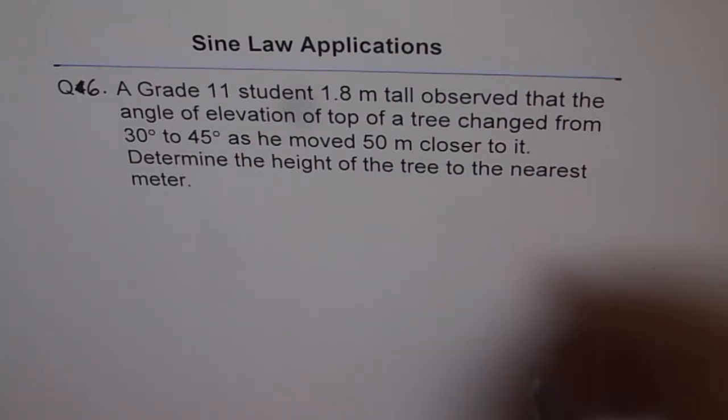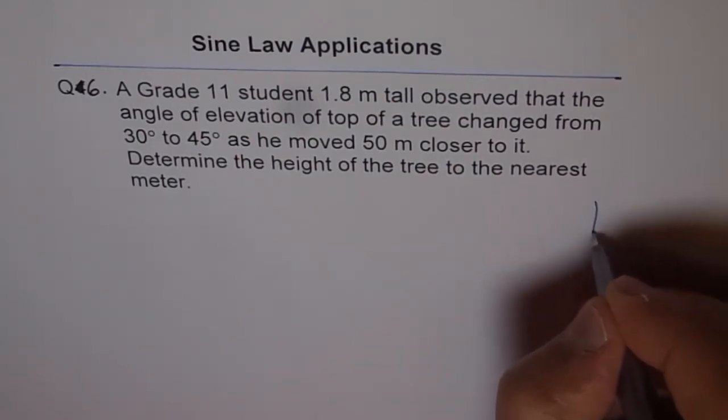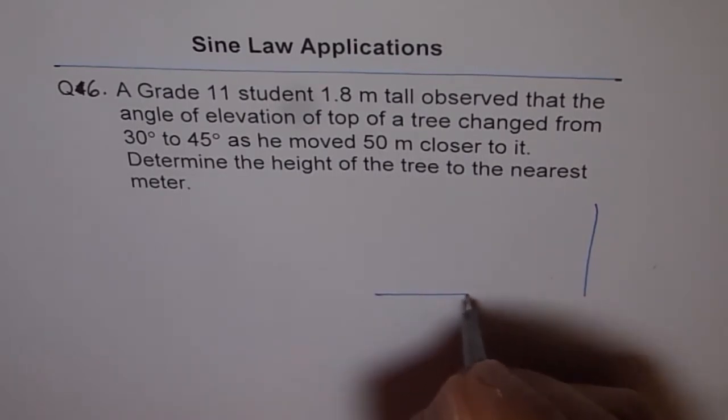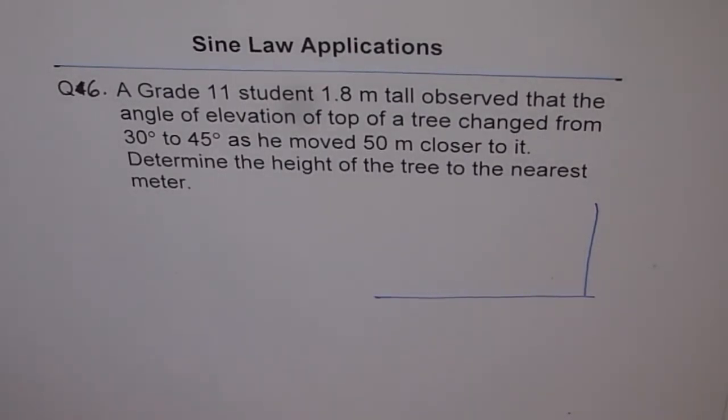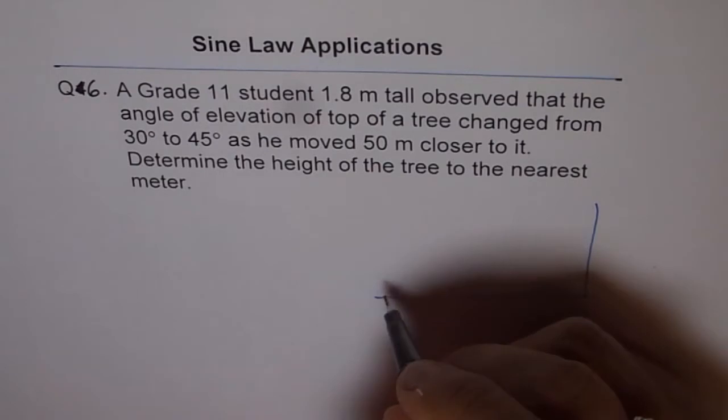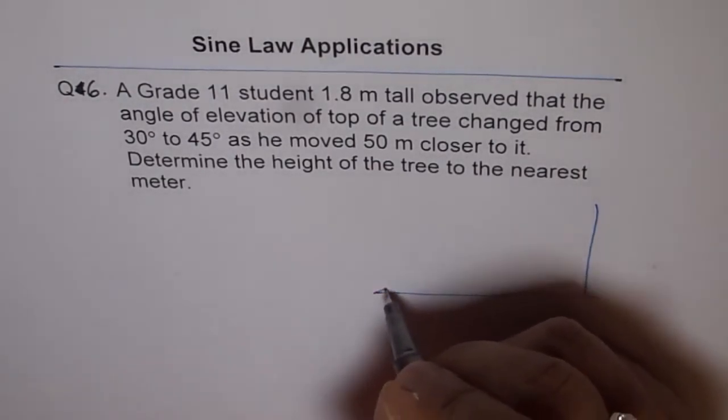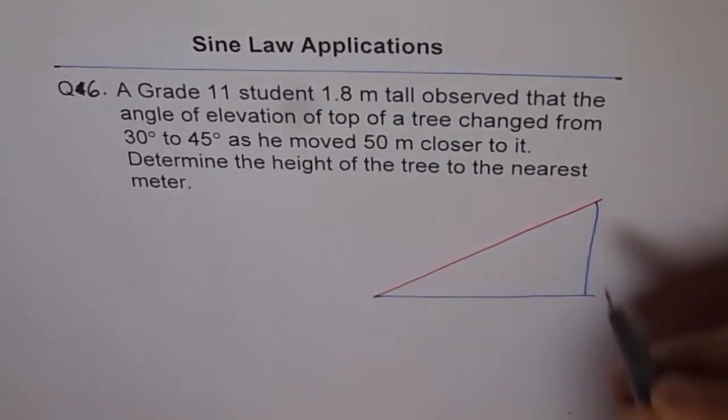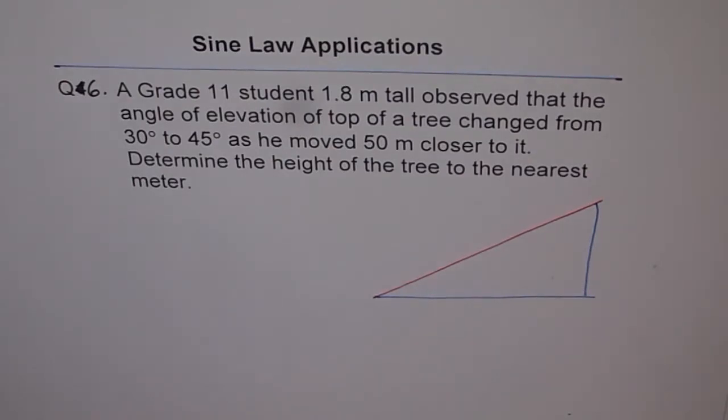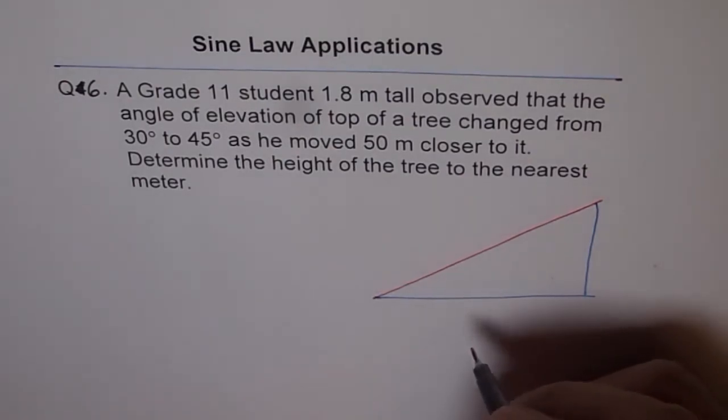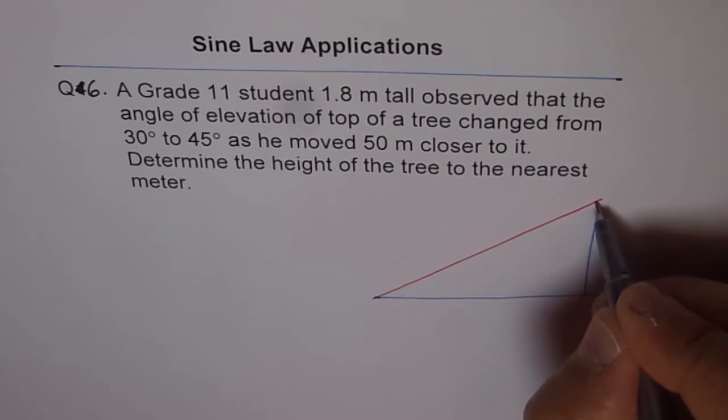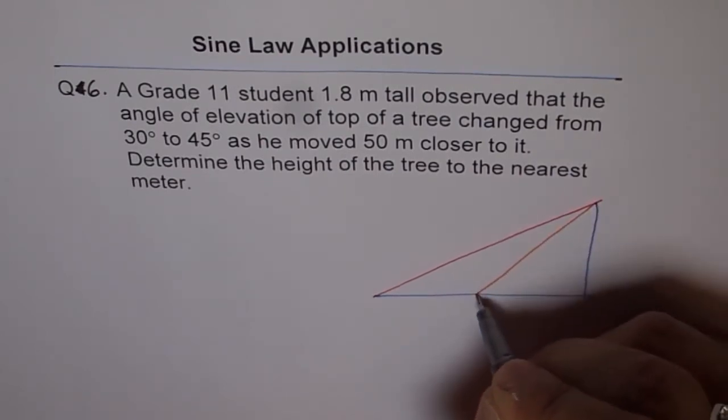Okay, so let's first try to sketch as we've done in all previous problems. So here is a sketch. Let's say the height of the tree is observed from one point, and then it is again observed after moving 50 meters. So let's say that is the second position.